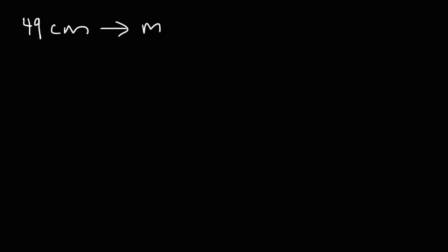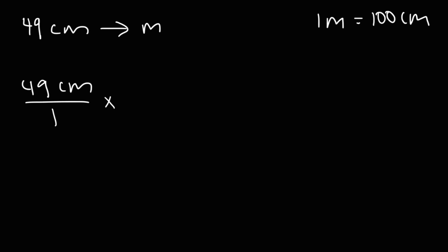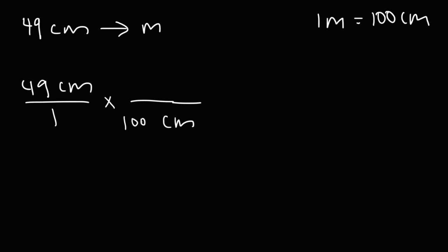Now let's talk about going backwards. Let's say we have 49 centimeters and we want to convert this into meters. This time we're going to have to divide. We write 49 centimeters as our first fraction. Because we have centimeters on top of the first fraction, we put that same unit on the bottom of the second fraction — so we write 100 centimeters on the bottom and 1 meter on the top, so that the units cancel. The 100 is on the bottom, which tells us we need to divide 49 by 100.